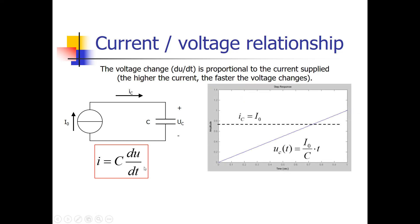In this example we have a constant current from the current source. We can calculate the voltage from the expression: i over C equals dU/dt, or u equals the integral of i with respect to time divided by C. When the current is a constant value, the integral — which is the area underneath this curve — increases proportionally with time. So the capacitance voltage u equals i times t divided by C, and when the current is constant, the voltage increases linearly.